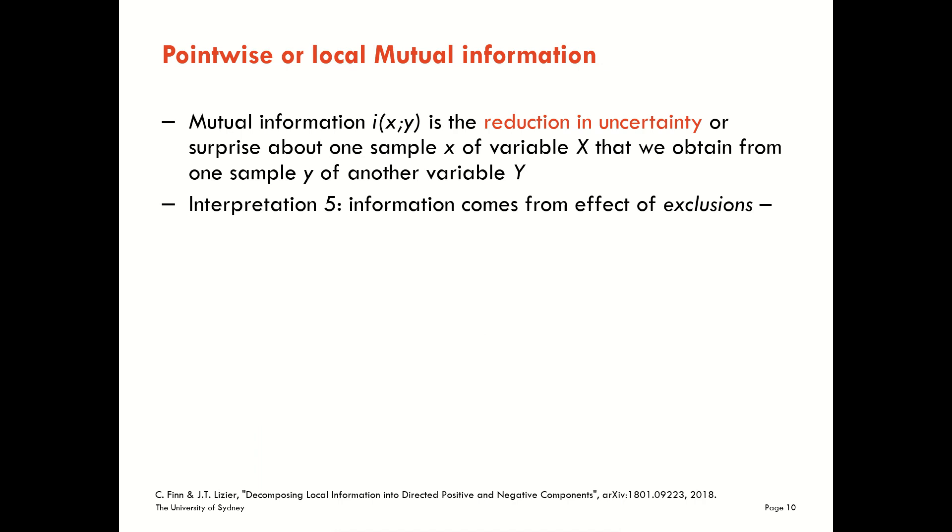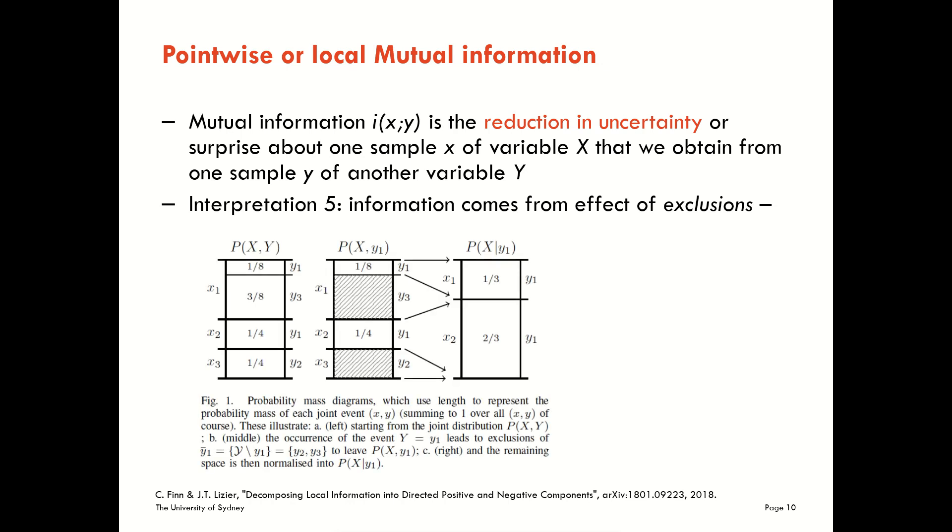Another way that we can look at the mutual information at this pointwise scale is to think about how information comes from exclusions. What I mean by that is exclusions in the probability space. We can think about a probability mass space here between our two variables, X and Y. We've written out all the combinations of X and Y that we may have in our space here. This probability mass represents the mass associated with getting X1 and Y1 as our realizations. This is the mass associated with the event X1, Y3, and so on, such that all those masses sum to 1.